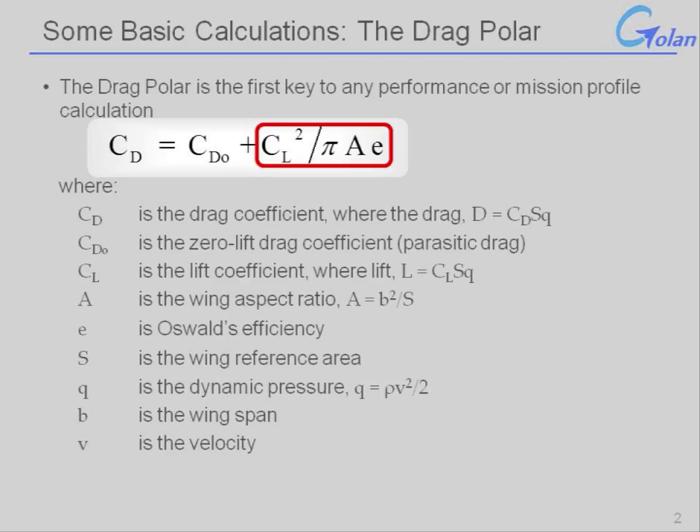The induced drag can be broken down into the lift coefficient squared, divided by the aspect ratio of the aircraft, which is the wing span squared divided by the wing area, and the Oswald's efficiency, or the aerodynamic efficiency of the aircraft.